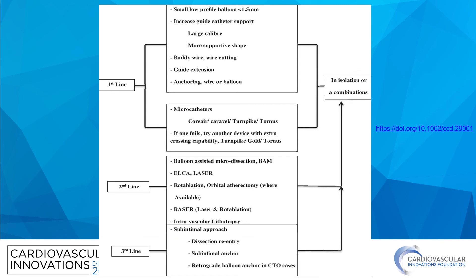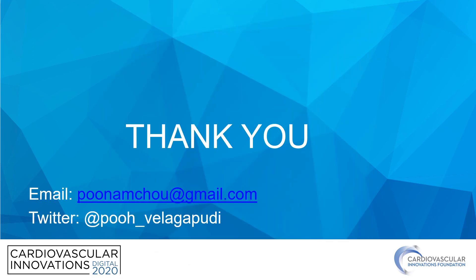Here's the algorithm one more time. First-line treatments are small low-profile balloons, increased guide catheter support, buddy wire, guide catheter extensions, and anchoring wire or balloon. Micro catheters such as Corsair, Carvel, Turnpike, and Tornis — if one fails, try another. Second-line therapies include balloon-assisted micro-dissection, ELCA, orbital atherectomy, rotablation, and intravascular lithotripsy, which is not yet available for coronaries. Third-line options include sub-intimal approaches such as dissection re-entry, sub-intimal anchor, and retrograde balloon anchor in CTO cases. Thank you so much.